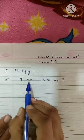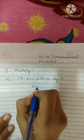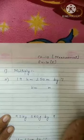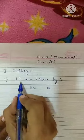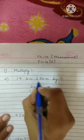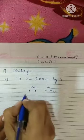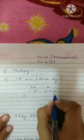So children, 2 units are given to us: Kilometer and Meter. First of all I am writing the units Kilometers and Metres. So how many Kilometers? 19. So 19 Kilometers will come and 250 meters. So I am writing 250 meters, we have to multiply with 7.